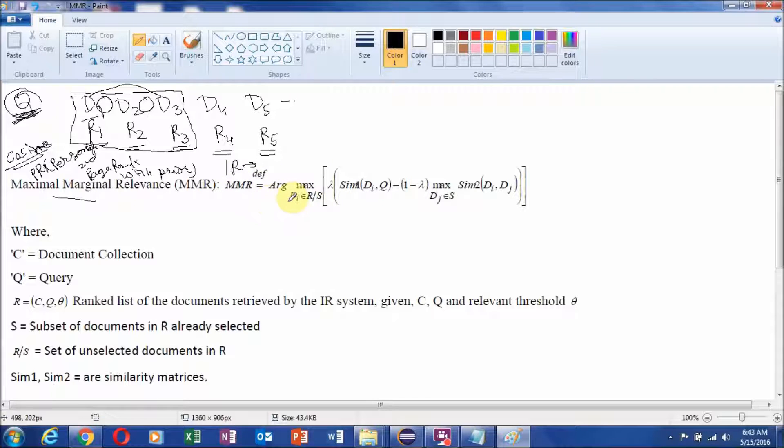To understand this maximum marginal relevance technique first of all we go through this lambda. This value can be either 0 or 1. We can take any value between 0 and 1. In general case if we take value of lambda as 0 then it will show the maximum diversity in ranking.